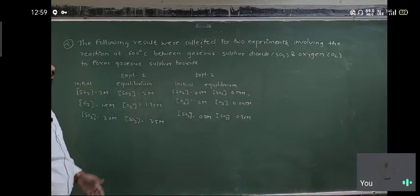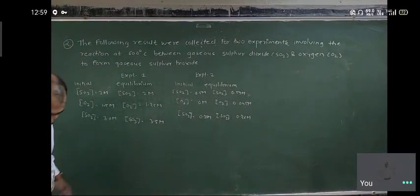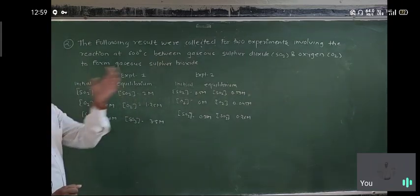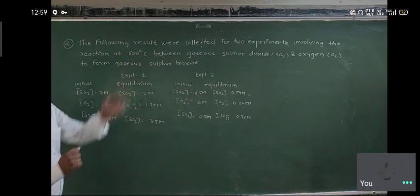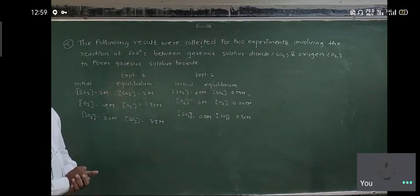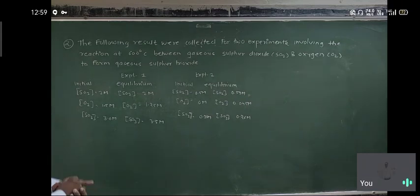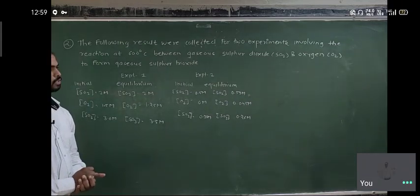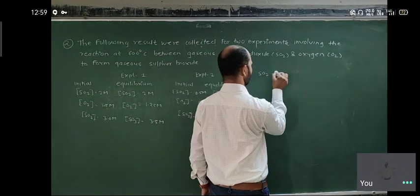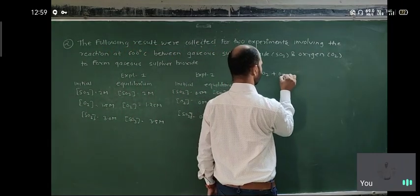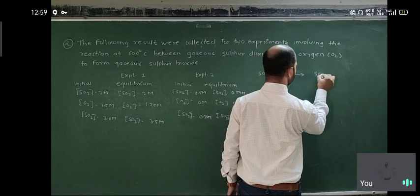This is problem number two. The following results were collected for two experiments involving the reaction at 600 degrees Celsius between gaseous sulfur dioxide and oxygen to form gaseous sulfur trioxide. The reaction given is SO₂ plus O₂ gives SO₃.